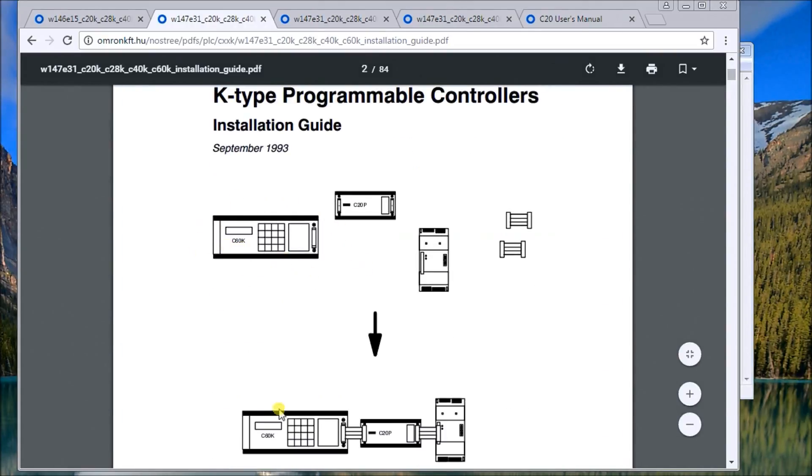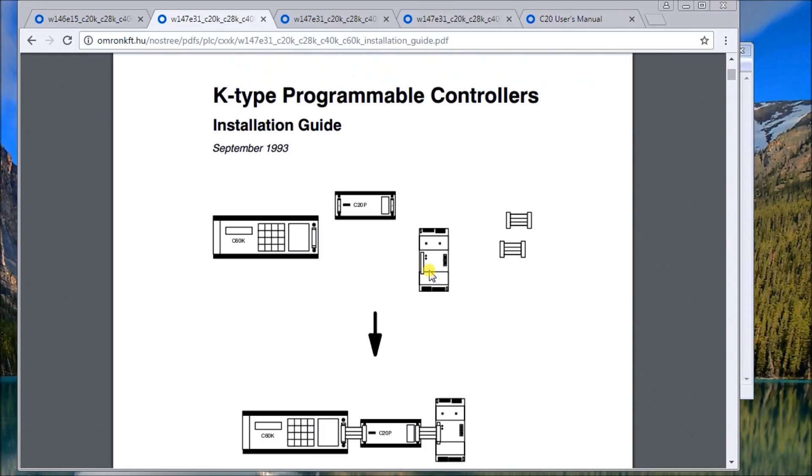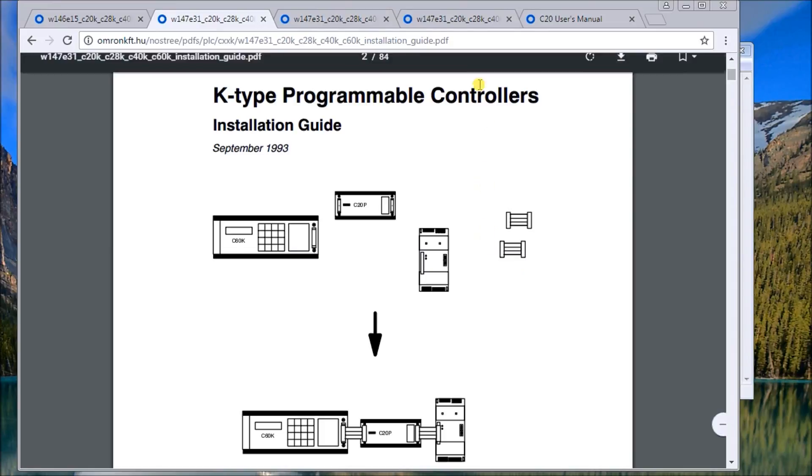Let's take a look at the actual unit itself. This is what the K series looks like - it's like a shoebox. With a ribbon cable you can connect the additional inputs and outputs. They're labeled as C20Ps, and then we have this FLATPAC I.O., which is actually a C20 programmable controller's I.O., connecting them with these ribbon cables.